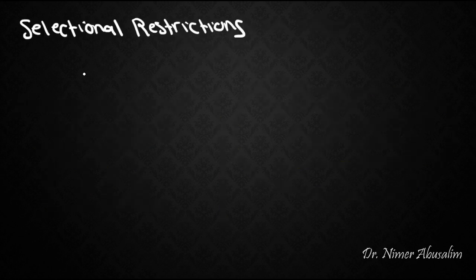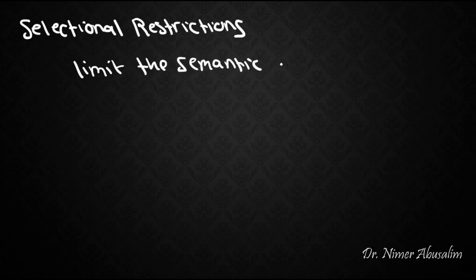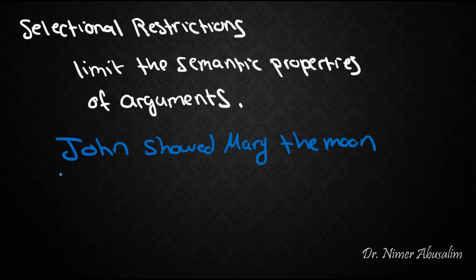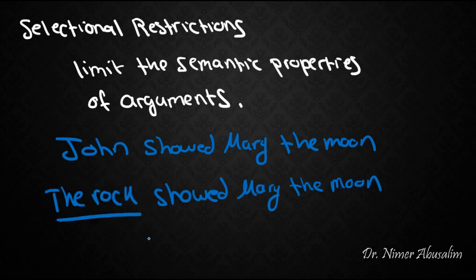Selectional restrictions work to limit the semantic properties of arguments. For example, the sentence 'John showed Mary the moon' is fine, but 'The rock showed Mary the moon' doesn't sound right. It makes no sense.